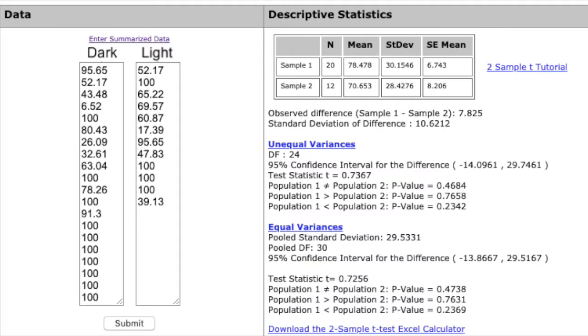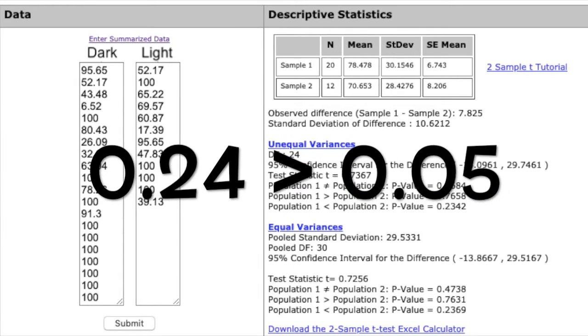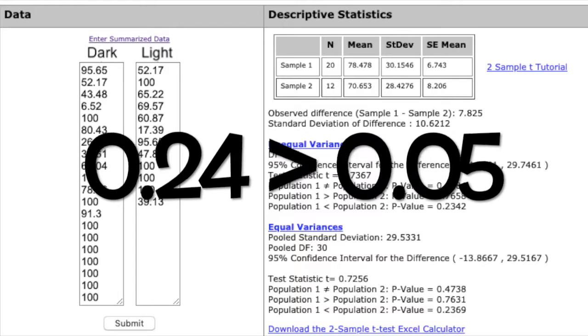However, data analysis using the student's t-test did not conclude a statistically significant difference with a p-value of 0.24, greater than the 0.05 threshold.